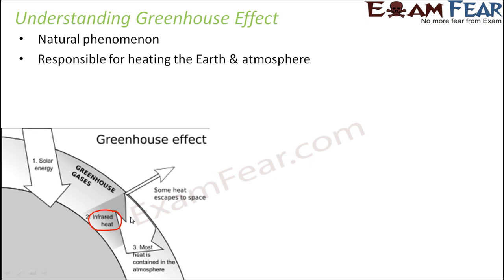This infrared radiation tries to get out of the atmosphere, but it is not able to escape into space. Why? Because the greenhouse gases absorb a major fraction of the infrared radiation. This absorbed infrared radiation heats the earth's surface. Since infrared radiation is all about heat, most of the heat — because the infrared radiation is absorbed within the atmosphere — is also contained in the atmosphere.